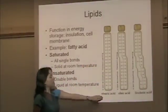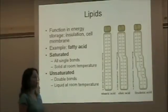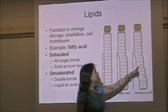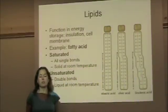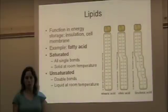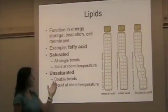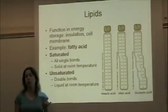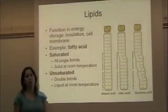Stearic acid has only single bonds in its tail. Oleic acid and linoleic acid have some double bonds in the tail, which create kinks. Fatty acids with only single bonds are called saturated fatty acids — they are solid at room temperature, like butter. Unsaturated fatty acids have double bonds in the tail, like oleic acid, and are liquids at room temperature — for example, oils like corn oil or peanut oil.